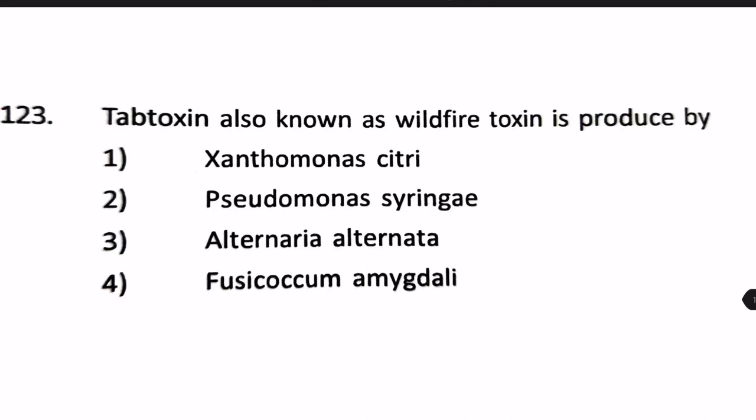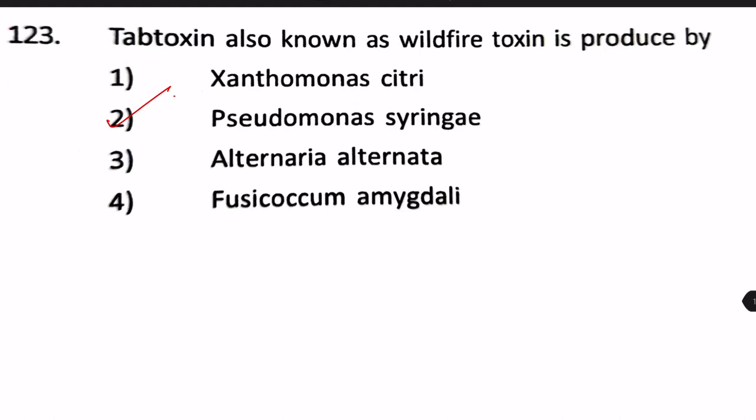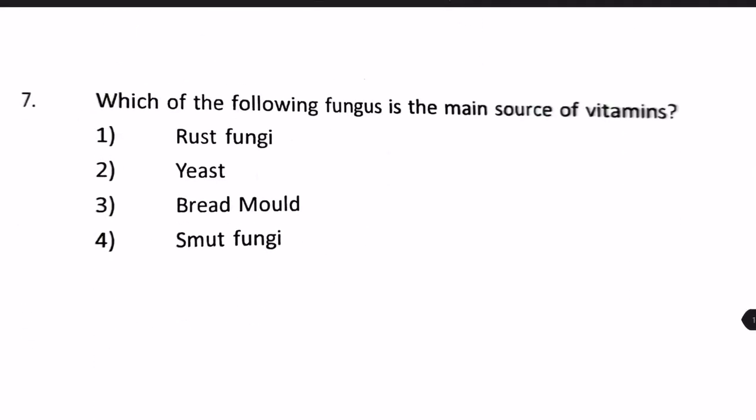Next question: Tabtoxin, also known as wildfire toxin, is produced by: 1) Xanthomonas citri, 2) Pseudomonas syringae, 3) Alternaria alternata, or 4) Physalospora amygdali. This is a rote-memory question — the answer is Pseudomonas syringae, which releases tabtoxin.